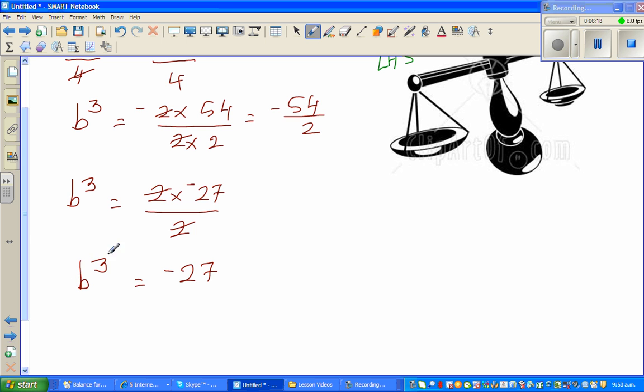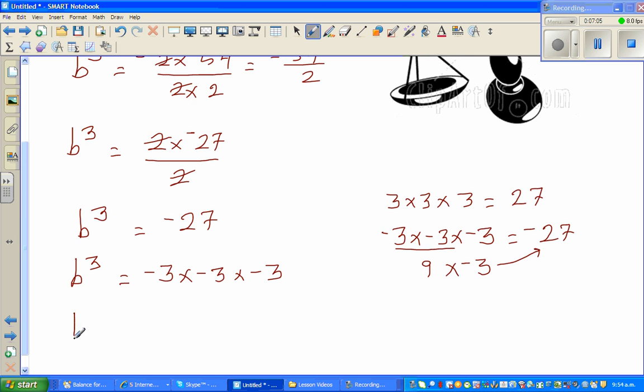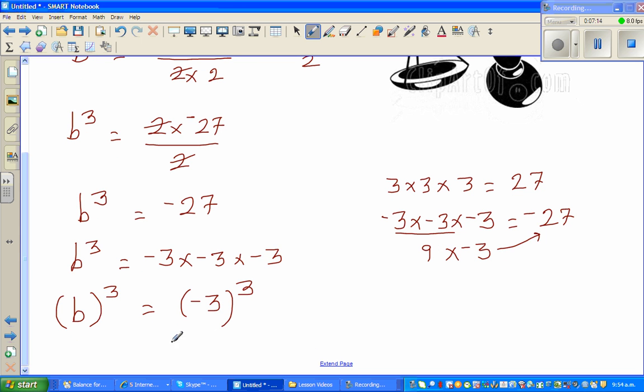Now here, b cube is minus 27, so can I write this as a cube? So you should know 3 times 3 times 3 is 27. But if you do minus 3 times minus 3 times minus 3, that is minus 27. To explain this, minus 3 times minus 3 is 9, and then you multiply by minus 3, which gives you minus 27. So I know b cube can be written as minus 3 times minus 3 times minus 3, because maths is all about comparing. So b cube is same as minus 3 cubed. Can you compare the left hand side and right hand side? You've got a cube here and you've got a cube here, so you can compare this with b.